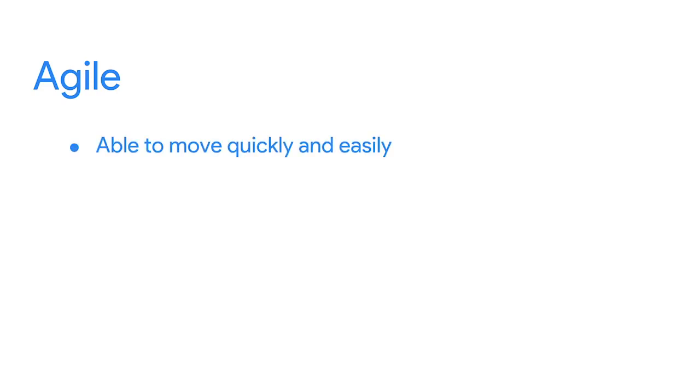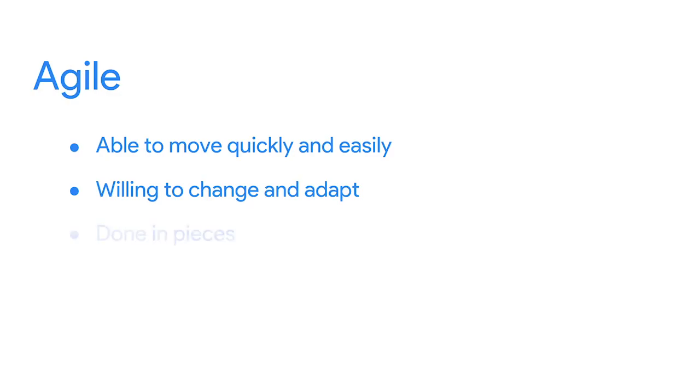The term Agile means being able to move quickly and easily. It also refers to flexibility, which means being willing and able to change and adapt. Projects that use an Agile approach often have many tasks being worked on at the same time, or in various stages of completion, which makes it an iterative approach. The concepts that shaped Agile methodology began to emerge in the 90s, as a response to the growing demand for faster delivery of products, mainly software applications at that time. But it wasn't officially named Agile until 2001. The phases of an Agile project also follow the project lifecycle stages we described earlier, generally speaking.